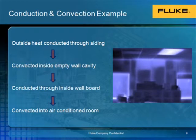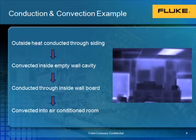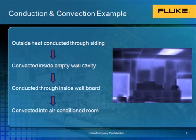In this slide, we see an example of where both conduction and convection are at work. We're looking from the inside of an air-conditioned room. Outside, there is heat being conducted through the siding. Next, it is convected through the empty inside wall cavity where insulation should be. From there, it is once again conducted through the inside wall board and then convected into the air-conditioned room. Be mindful that oftentimes more than one mode of heat transfer can come into play.